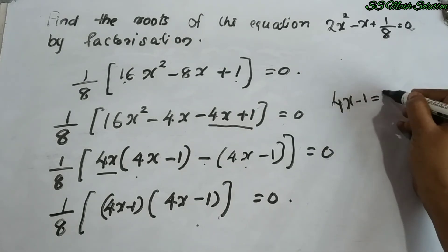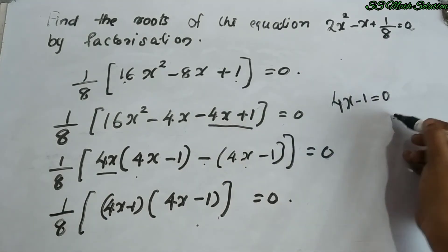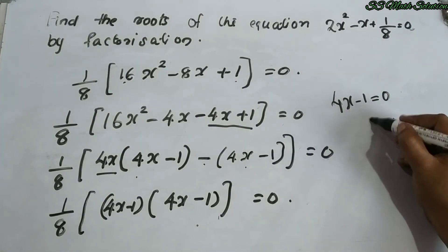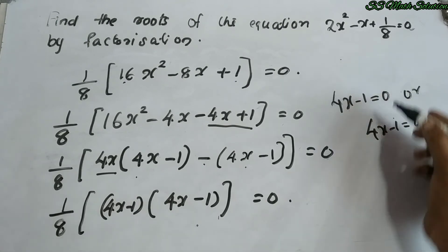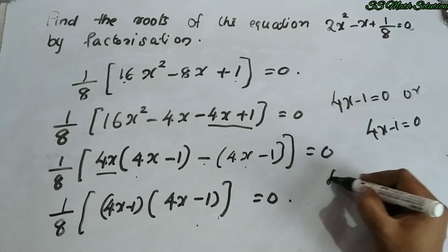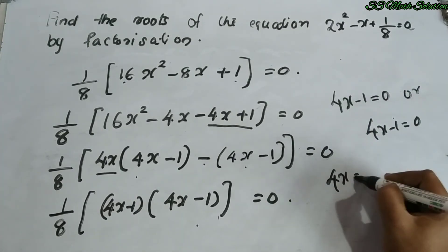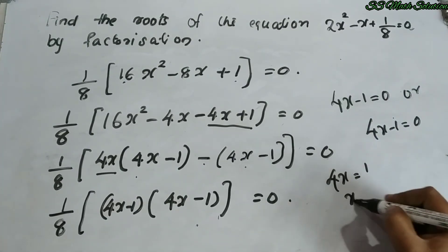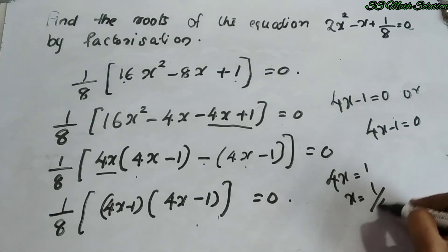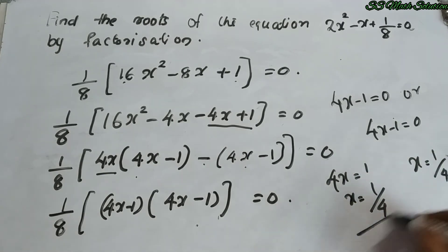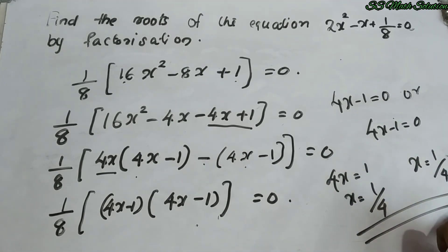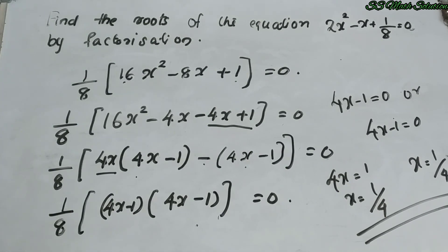From 4x − 1 = 0 we get 4x = 1, so x = 1/4. Since both factors are the same, there is only one root for this equation: x = 1/4.